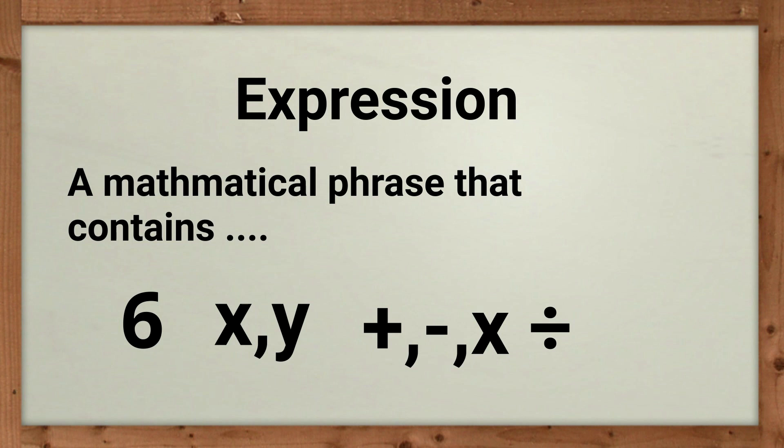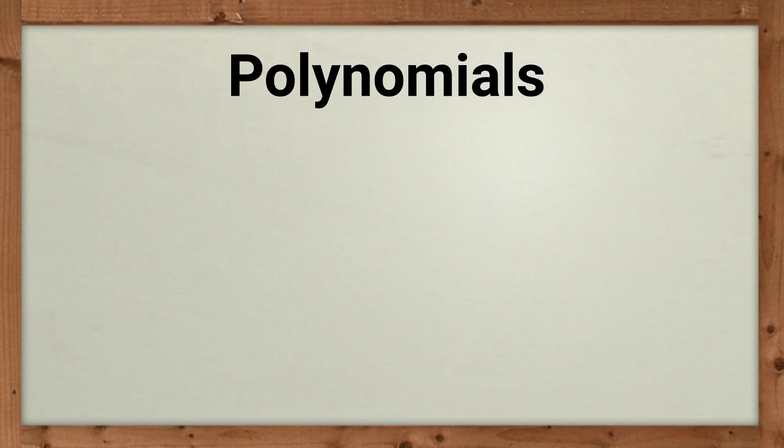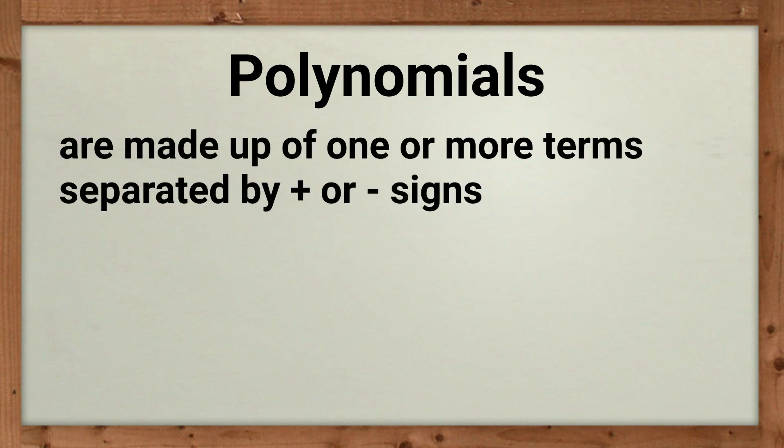And then it may also contain numerals called constants. Polynomials are made up of one or more terms separated by a plus or minus sign. You can think of a term as either a number by itself, which is a constant, or the product of a number, which is a coefficient, and a variable multiplied together.